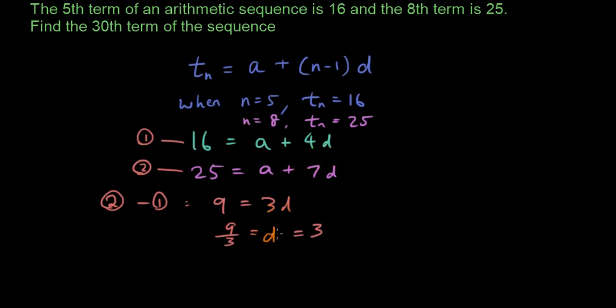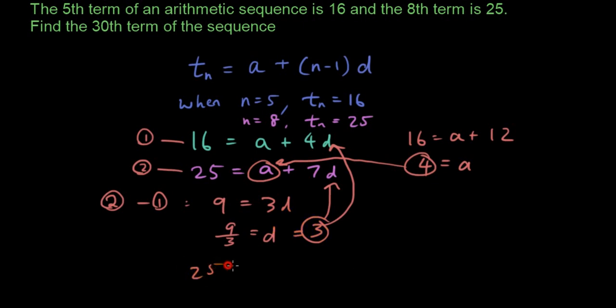And then we can substitute that into our original equation. So put that number in here. So 16 equals a plus 4 times 3, which is 12. So a is equal to 4. Right, now let's try 3 into d and 4 into a in the second equation and see if it works. So 25 equals 4 plus 7 times 3, which is 4 plus 21, which is 25. So yes, it works.